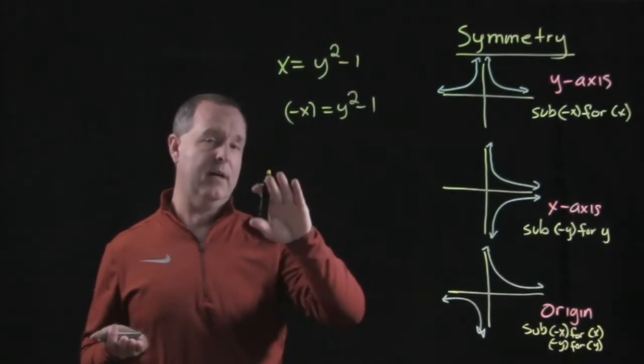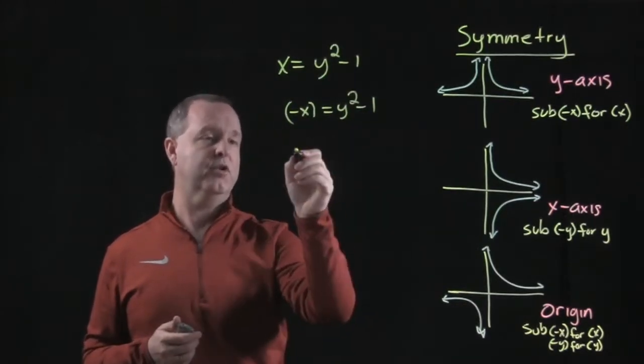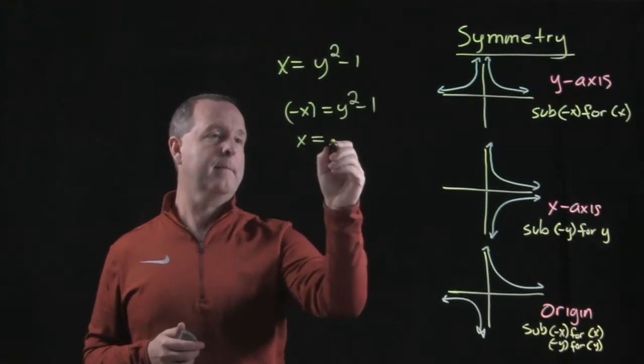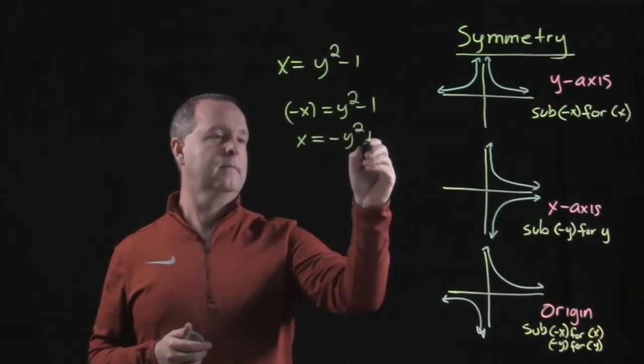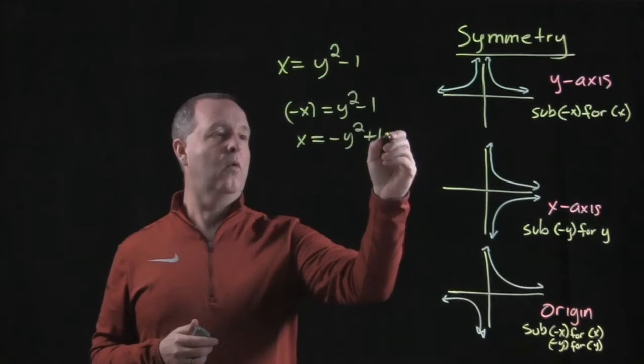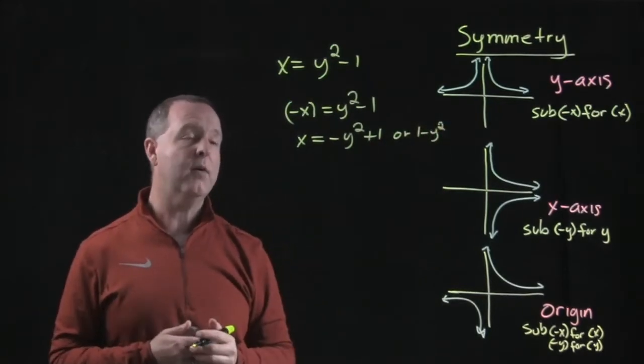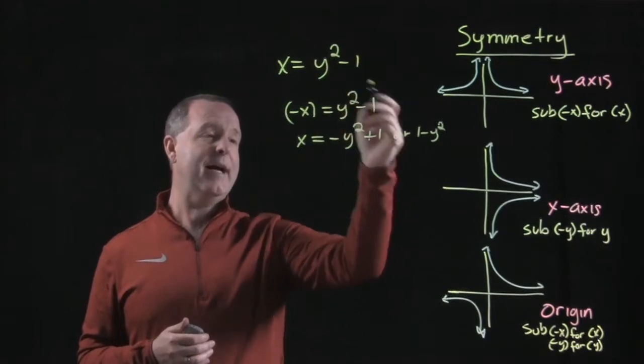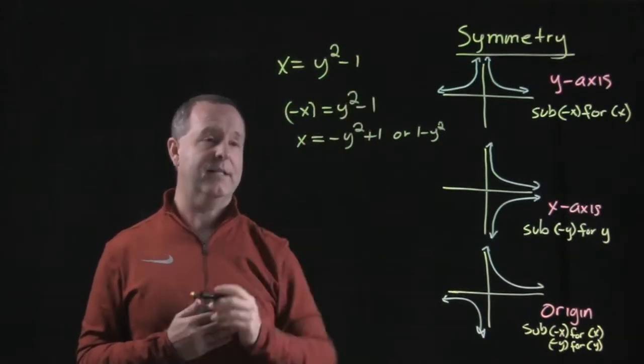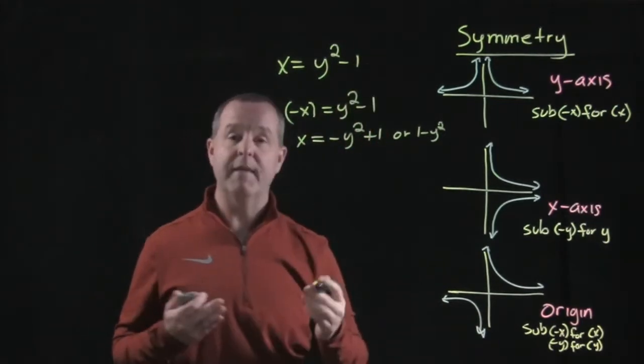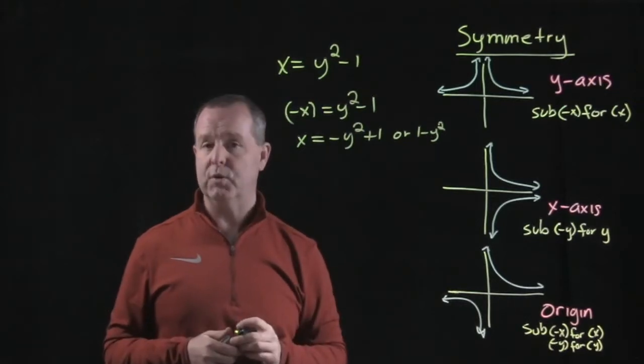Don't want to have a negative on the left side, so we'll distribute the negative through, or 1 minus y squared. What you notice is that my right side differs from my start and the end. So when that's the case, there is no symmetry there.